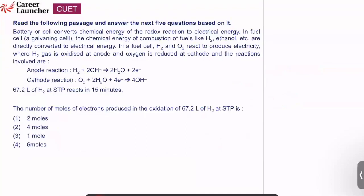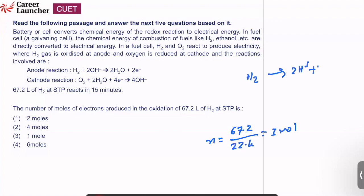Question number 13 (same paragraph): number of moles of electrons produced in the oxidation of 67.2 liters of H2 at STP. We have 3 moles of H2. Since H2 → 2H⁺ + 2e⁻, one mole of H2 gives 2 moles of electrons. So 3 moles gives 6 moles of electrons. Answer is option 4.